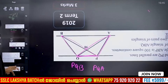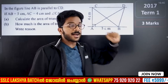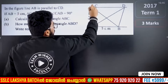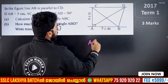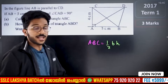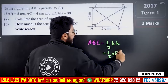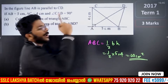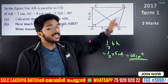AB is 5 cm, AC is 4 cm, and the angle is 90 degrees. Triangle ABC area equals half base times height — the angle is 90 degrees, so the area is half times 4 times 5, which equals 10 square cm. How much is the area of ABD? ABD is the same area — 10 square cm.